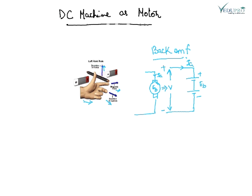The EMF induced in the coil of the DC motor opposes the current through the conductor. This happens when the armature rotates, and this EMF is called back EMF. This EMF depends on the speed of rotation.